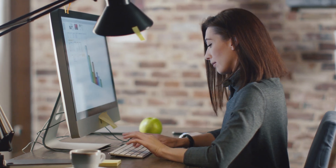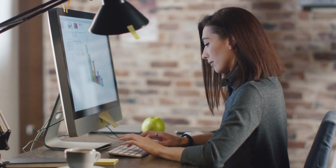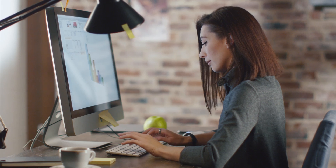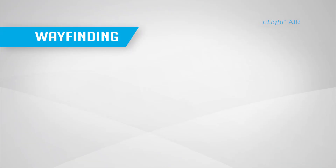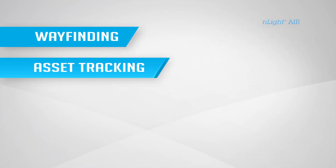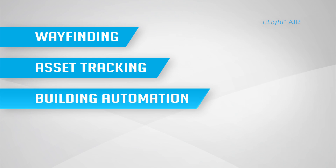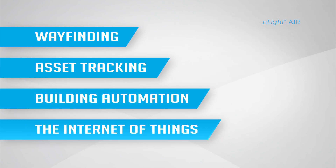nLight Air transforms buildings of the past into smart buildings of the future with upgradeable features like wayfinding, asset tracking, and building automation, and harnesses the potential of the Internet of Things for apps in development and yet to be discovered.